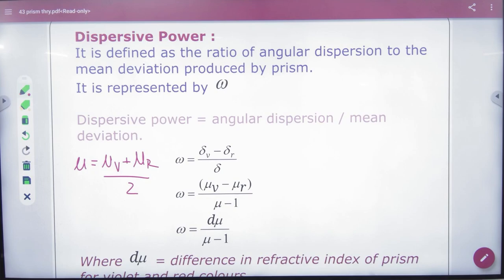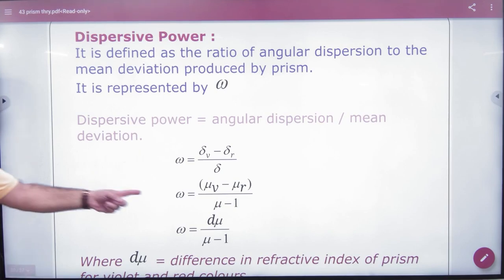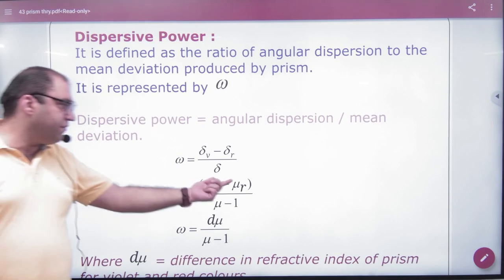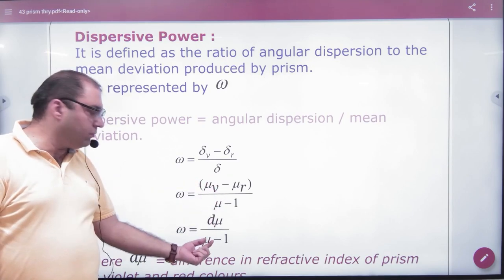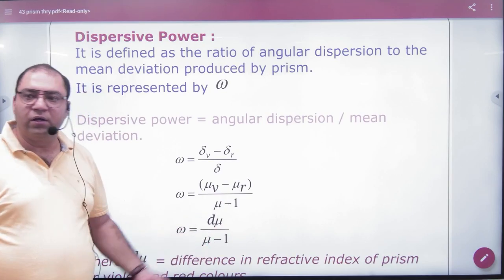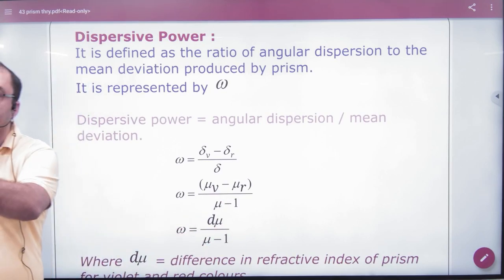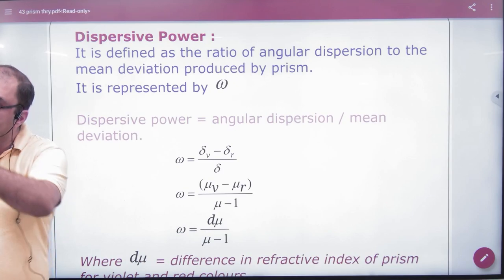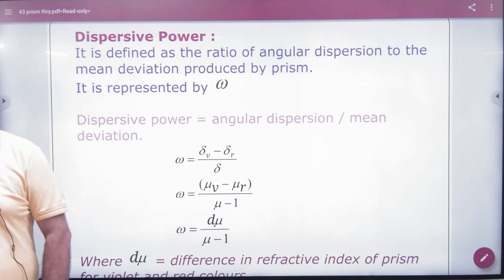So if you have both refractive index and mean, so it will be like change in refractive index red and violet upon mu minus 1. So formula note: dispersive power. And remember the dispersive power, exactly the formula which we have noted.